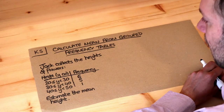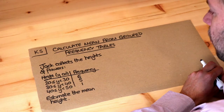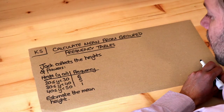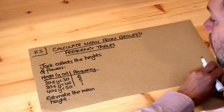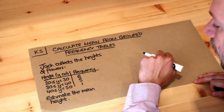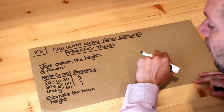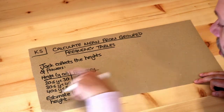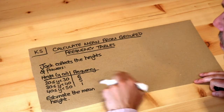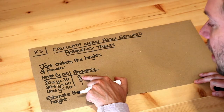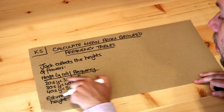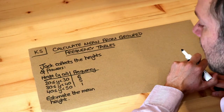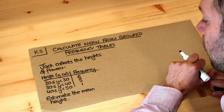Hello and welcome to this Dr Ross Maths key skill video on calculating mean from grouped frequency tables. We've got the heights of different flowers and we've recorded how many flowers there are in different groups — for example, six flowers with a height between 20 to 30 centimetres and so on.